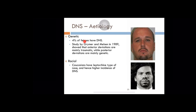Genetically, 4% of fetuses have deviated nasal septum. Anterior deviations are mainly traumatic while posterior deviations are mainly genetic. Caucasians have a leptorhine nose — a sharp, thin nose — and these people are more prone for septal deviations. Other causes include mouth breathing, thumb sucking, poor dentition, and nasal masses such as polyps and benign and malignant tumors.